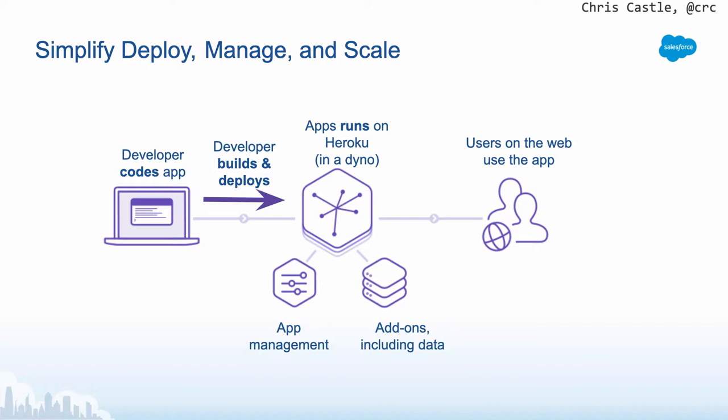Through the command line and through a web-based interface you have app management controls. You have these things called add-ons, which we'll get into later. The app is now running live on the web. If you want to right now on your phone, you could go to flying-pigs.herokuapp.com and you would see it too. I wasn't faking anything here — it wasn't a fake demo. I didn't know the app name before this gentleman gave it to me. That app is live on the web, running in a free dyno.